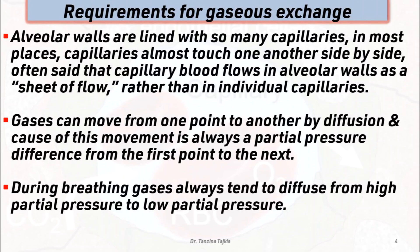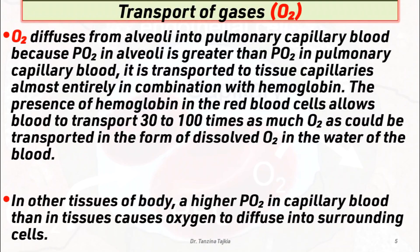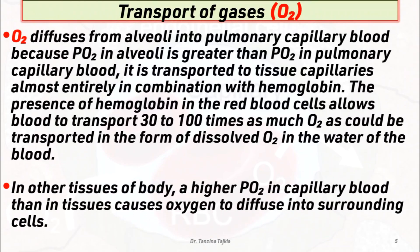Gases can move from one point to another by diffusion, and the cause of this movement is always a partial pressure difference. During breathing, gases always tend to diffuse from higher partial pressure to lower partial pressure. In transport of gases, oxygen diffuses from alveoli into pulmonary capillary blood because the partial pressure of oxygen in alveoli is greater than the partial pressure of oxygen in pulmonary capillary blood.